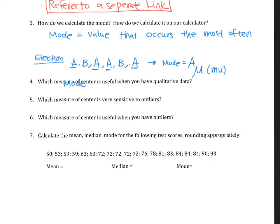Number five, which measure of center is very sensitive to outliers? That would be the mean. Because you have to calculate the mean, you're adding a bunch of numbers. So when you have a big number, this is going to change the mean a lot. Number six, which measure of center is useful when you have an outlier? So median. Because the median is going by a ranking. Just having one outlier doesn't change the median too much.